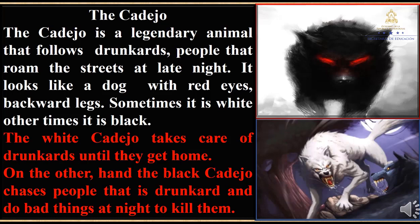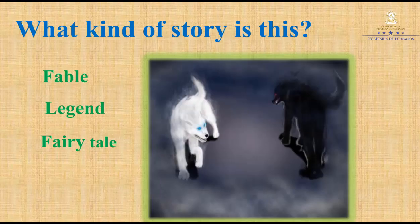Now, let's listen to a legend. Dakadeo. Listen carefully and do not repeat. Dakadeo is a legendary animal that follows drunkard people that roam the streets at late night. It looks like a dog with red eyes and backward legs. Sometimes it is white, other times it is black. The white Dakadeo takes care of drunkards until they get home. On the other hand, the black Dakadeo takes people who are drunkards and do bad things at night, to kill them.